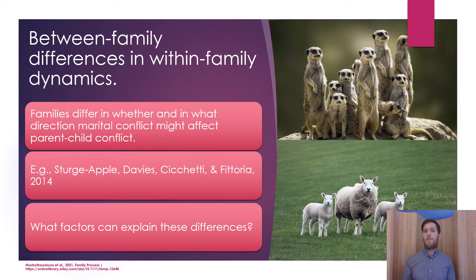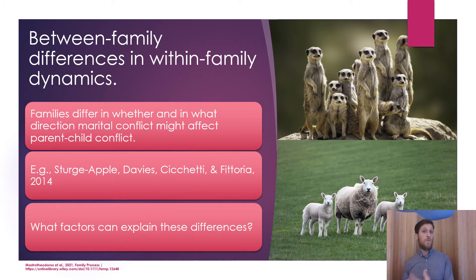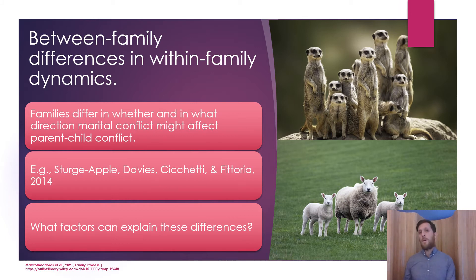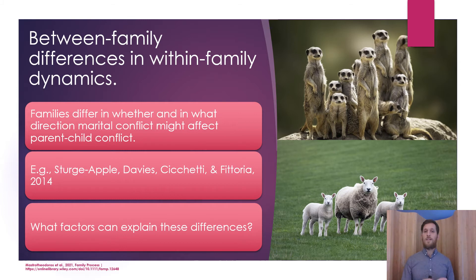So in one family, any time marital conflict happens, the chances for parent-child conflict might increase — a spillover pattern — whereas for another family it might be a compensatory pattern, where any time marital conflict happens there could be a decrease in the chances of parent-child conflict. These are between-family differences and within-family dynamics: how families differ in the degree that something happening in one dyad will affect the other dyad.